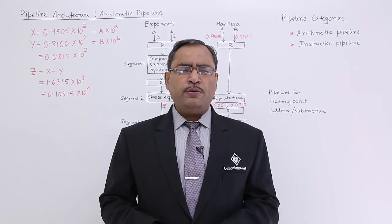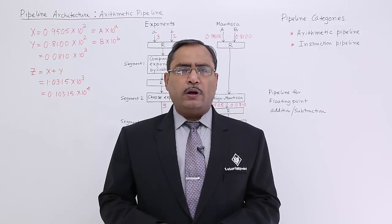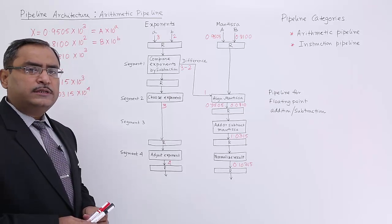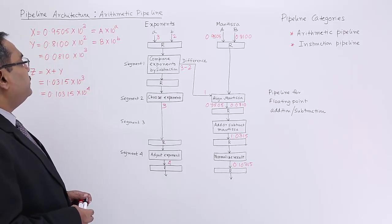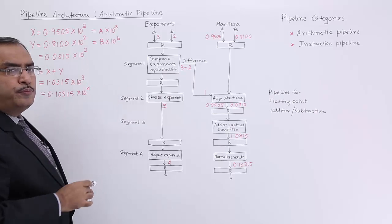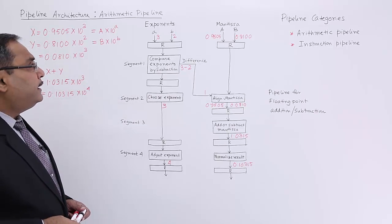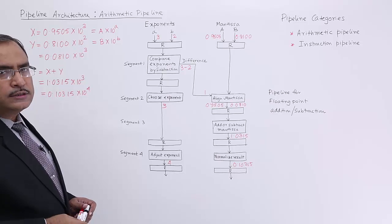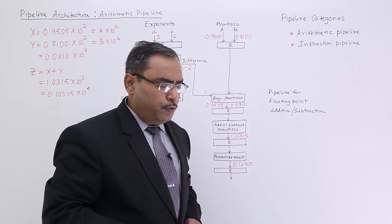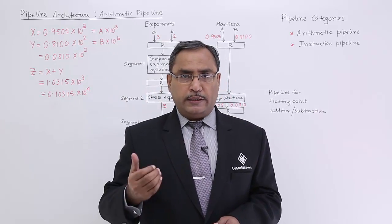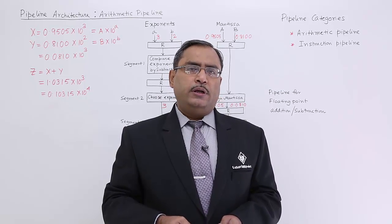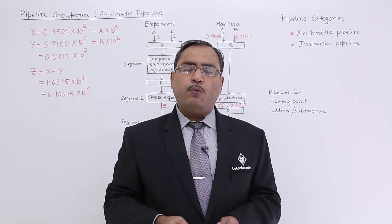Stage 1 to stage 4 can also be called segment 1 to segment 4. Let us suppose we are having two numbers: one is x and another one is y. X has been expressed in the form A into 10 to the power of small a, where small a is the exponent and capital A is the mantissa or significand, and similarly for y.